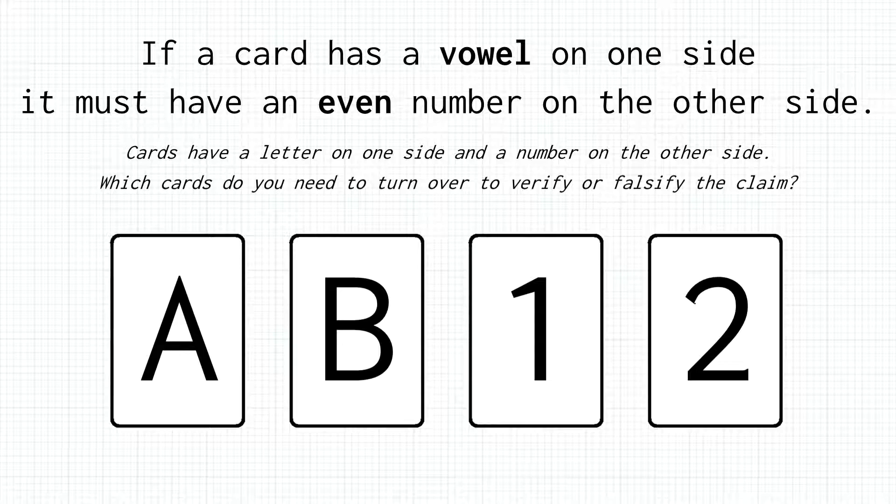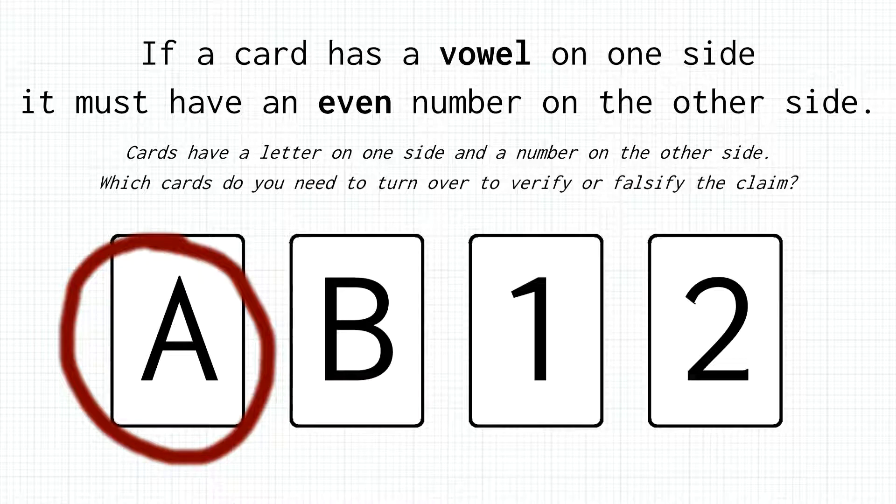Ready for the solution? First, we need to turn over the vowel, that is card A, to ensure that it has an even number on the other side. If it hasn't, then the rule is violated, and we can stop here. If the card A does have an even number on the other side, we turn over the odd number, that is the card with number 1.